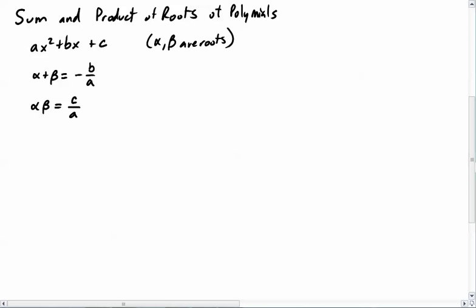Now, what I want to do today is extend this to all polynomials. So, what we're going to do is we're going to take a cubic now. A cubic is ax cubed plus bx squared plus cx plus d. Now, this time you have a possible three roots, so alpha, beta, and gamma.